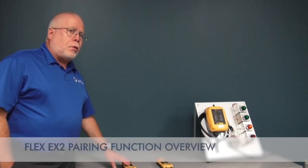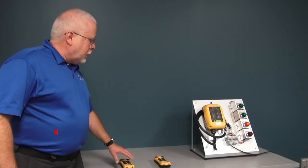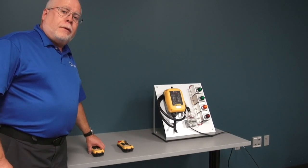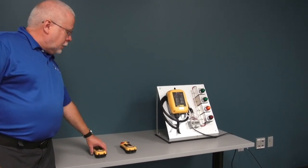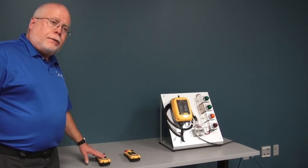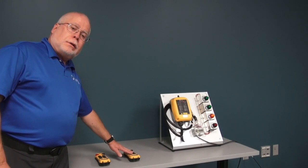The Flex EX2 product allows us to do what's called a pairing function between two different transmitters or from a receiver to a transmitter. This is all through RF communication, and when we do the pairing function between transmitters, one transmitter sends RF information regarding its programming to a new transmitter.